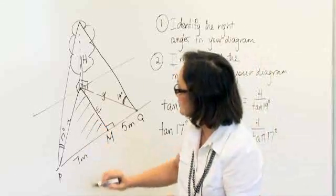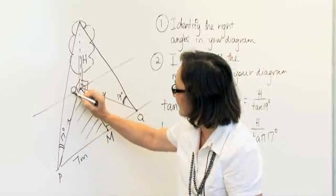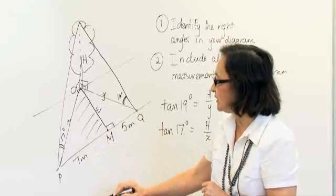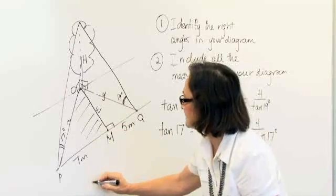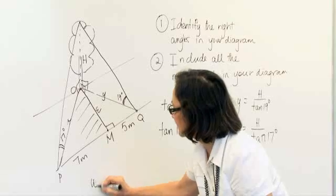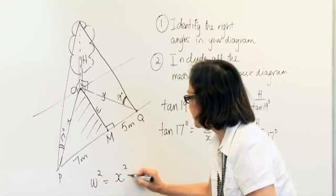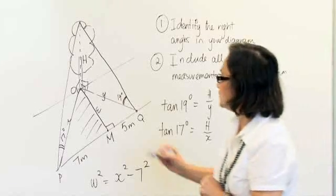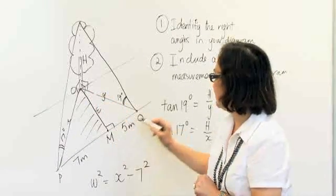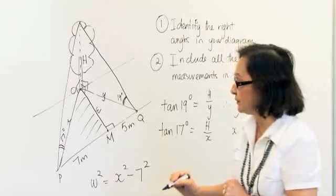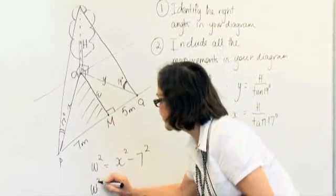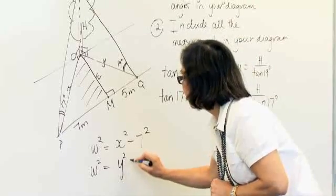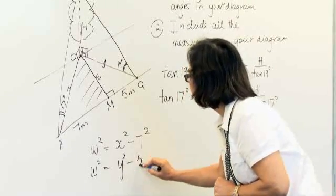Using triangle OPM and Pythagoras' theorem, we can say that W squared equals X squared, take away 7 squared. And using triangle OMQ with Pythagoras' theorem, we can say that W squared is also equal to Y squared, take away 5 squared.